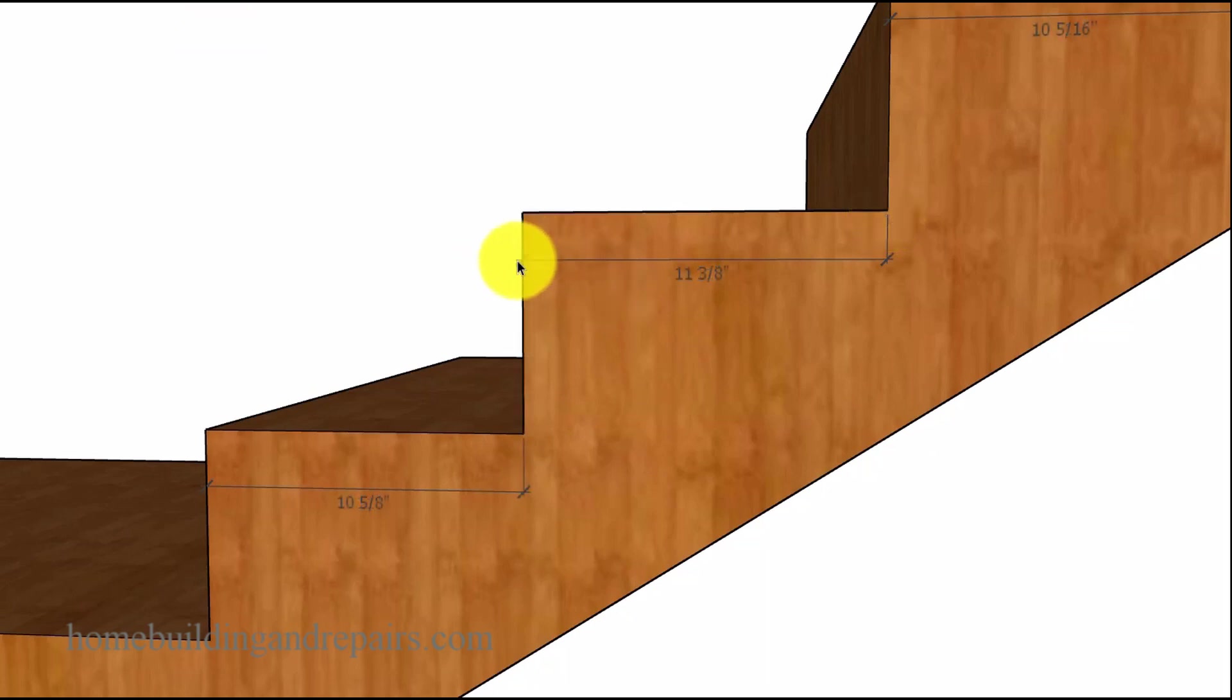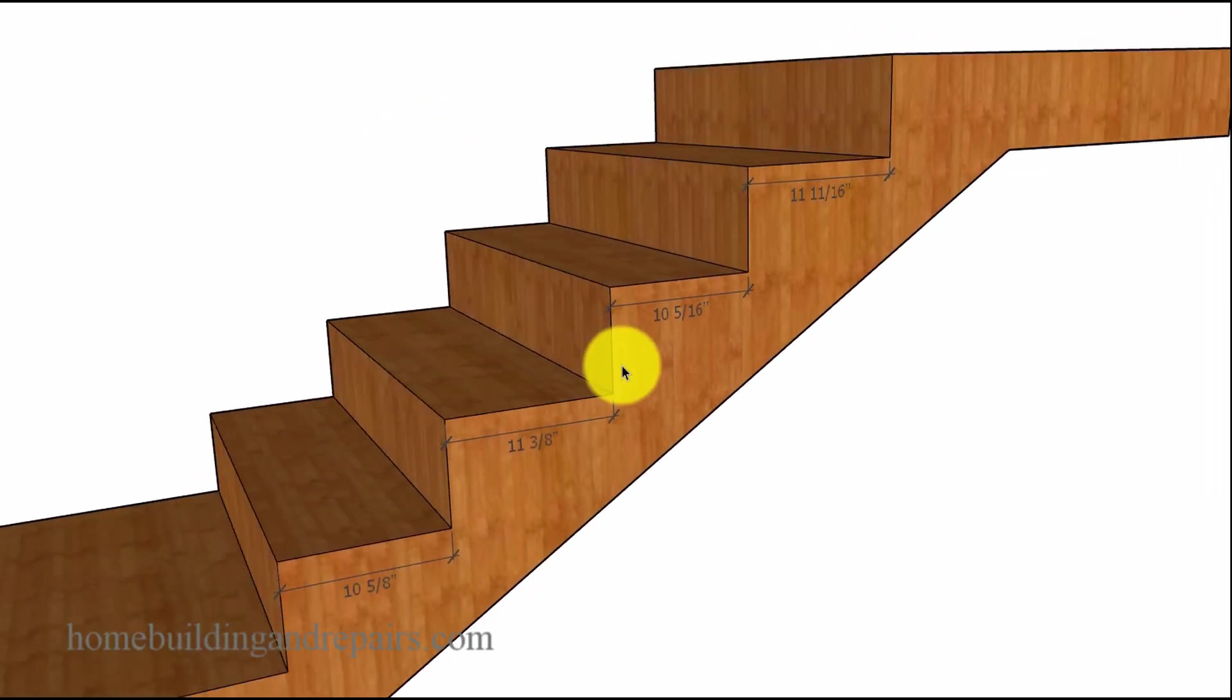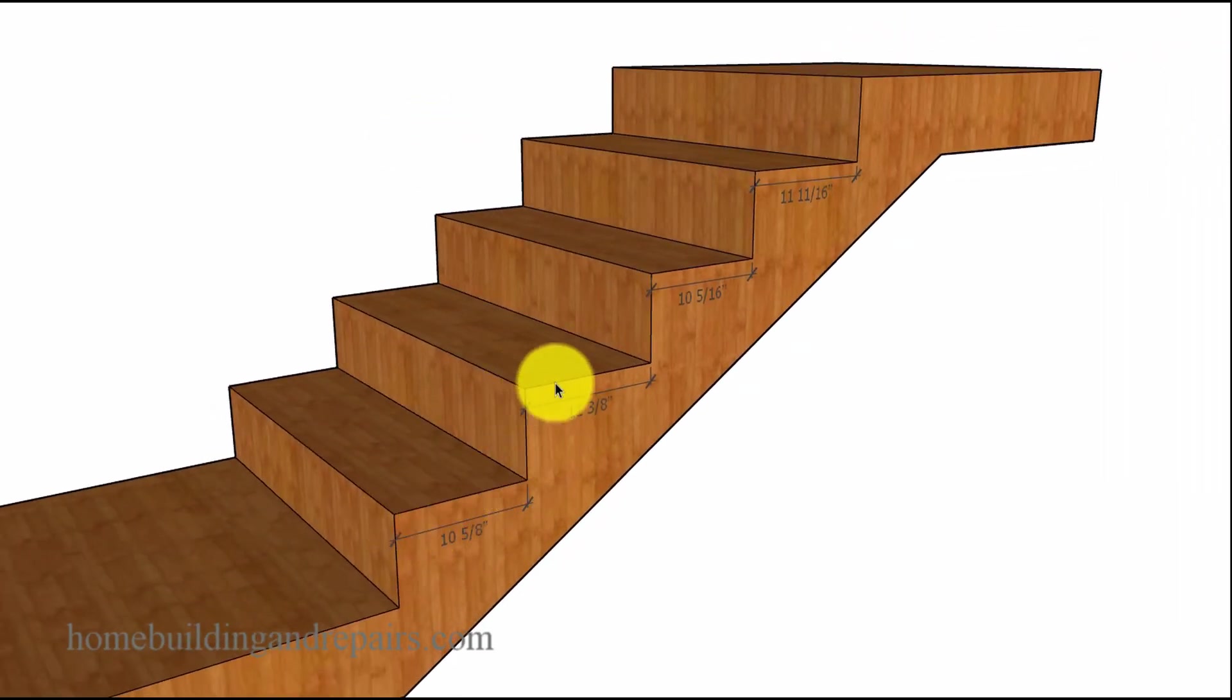They shouldn't be different like this. So if you have a step that's 11 and 3 eighths and one that is 10 and 5 eighths, and then another one that is 10 and 5 sixteenths and 11 and 11 sixteenths, according to the building code, you are not allowed to have a variation of more than 3 eighths of an inch from the smallest measurement. This building code was confusing a long time ago, but it looks like they changed it in the 2018 version and whoever did it did a good job on it.